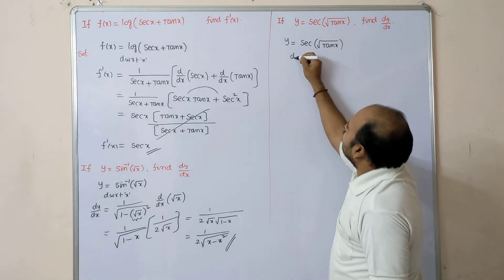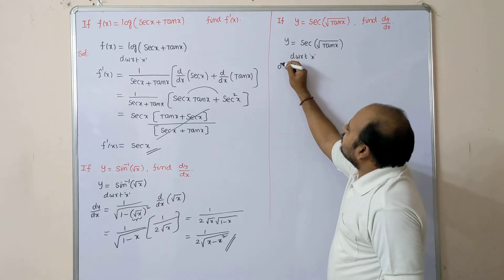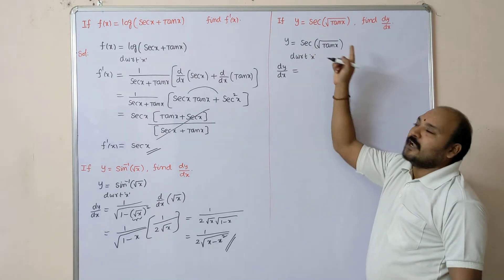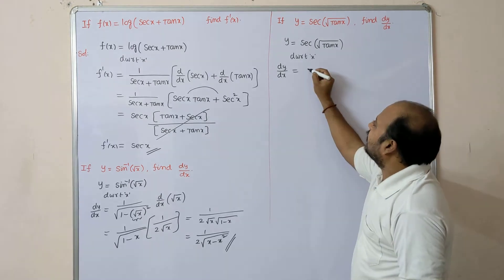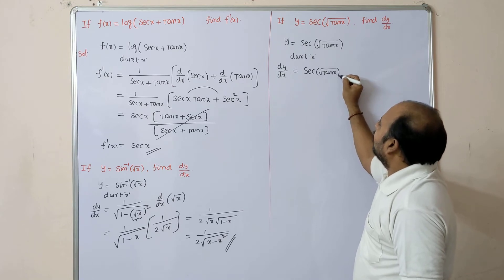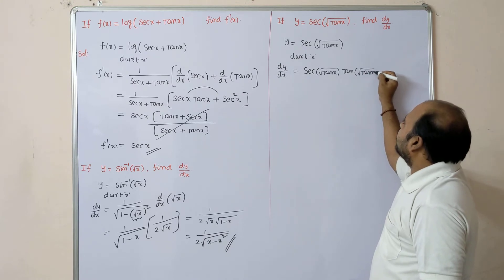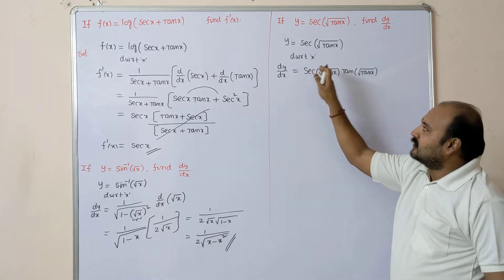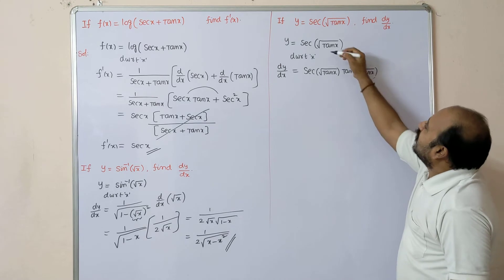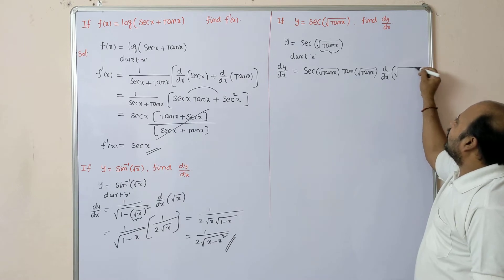Differentiate with respect to x. dy/dx = d/dx of sec(x) = sec x · tan x, so we get sec(√tan x) · tan(√tan x). But we cannot stop there — the function inside must also be differentiated. So multiply by d/dx of √tan x.